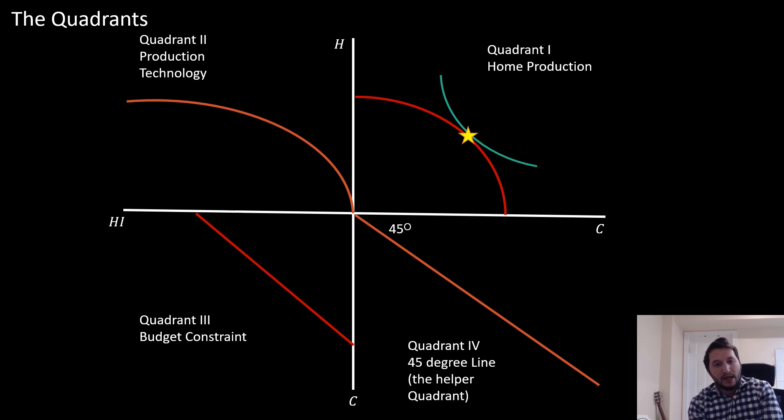Our third quadrant is our budget constraint here, which indicates our individual's possibilities where he can choose between investing in this health input and consumption of a regular good.